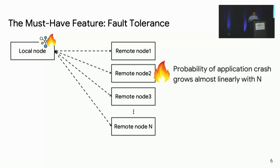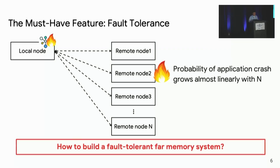Essentially, a simple mathematical calculation shows that the probability of application crash grows almost linearly as the number of remote nodes increases. Therefore, we argue that any practical far memory system must tolerate remote node failures — and that is the main theme of this talk: how to build a fault-tolerant far memory system.